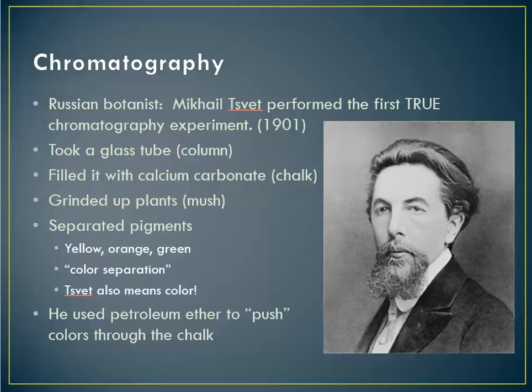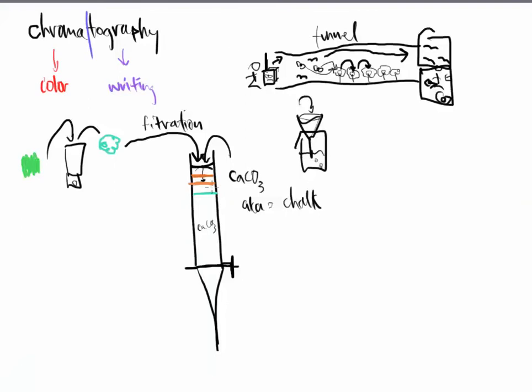Now, the problem that Tsvet saw was that as the sample dried out, the color separation stopped. So in order for the color separation to travel through the column and out the other end of the tunnel, which is what we're after, he had to keep adding a solvent. He had to keep adding a liquid to the process. As he kept adding liquid, the liquid kept pushing those compounds through the column and out the other end. But you've got to constantly add liquid in order for this process to work. So here's the limitation.